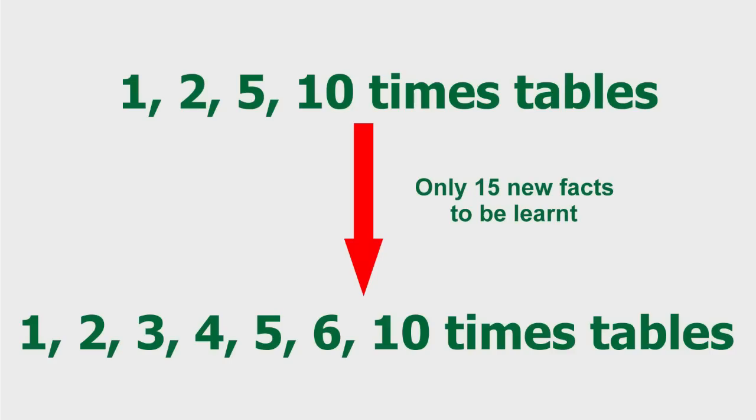When I first discovered this, I was so flabbergasted I couldn't believe it, but it is actually true. If your child already knows the one, two, five and ten times tables, they only need to learn fifteen new facts and they will then know all the tables — one, two, three, four, five, six and ten. That's quite amazing, isn't it? And to go from knowing those to knowing all the tables up to ten times ten, they actually only need to learn another six facts.